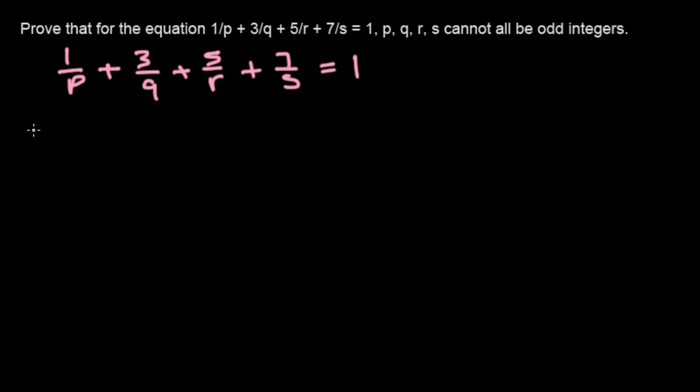The way we're going to do it is to first assume that p, q, r, s all have odd integer solutions. So let's say p, q, r, s are all odd. We're going to use this to find a contradiction later.